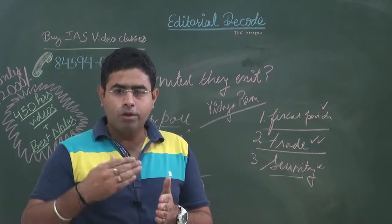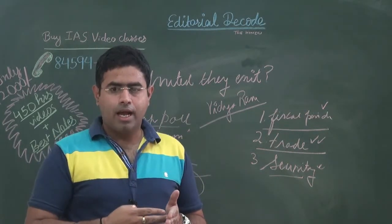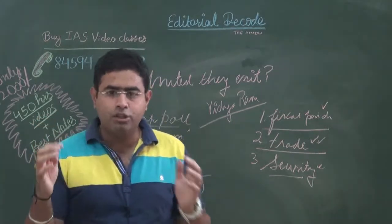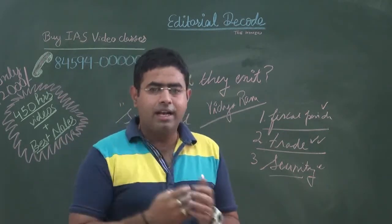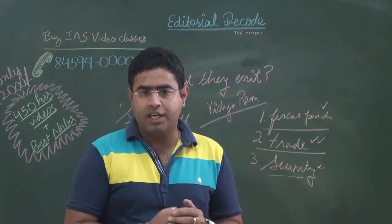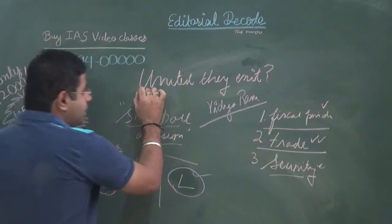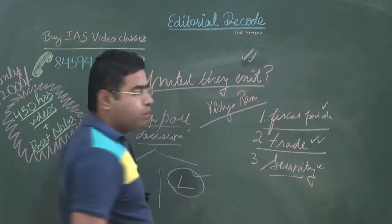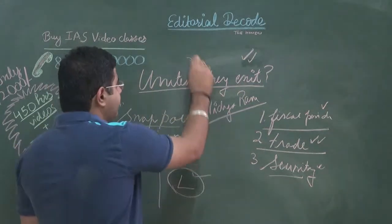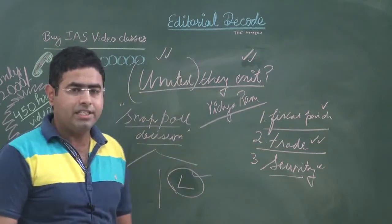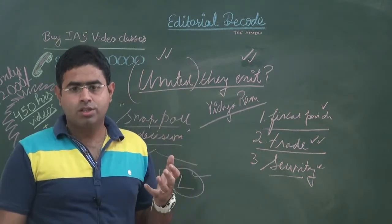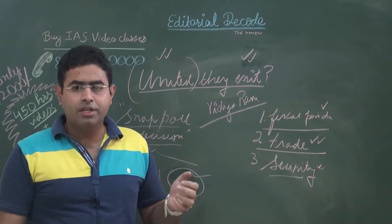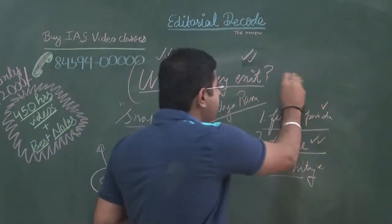In order to have an effective exit and to put forward the policies and ideology that Theresa May stands for, she wanted a larger majority in parliament. To achieve that, general elections needed to take place again. This is what the title of the editorial suggests: 'United They Exit' — before the exit is brought into being, parliamentarians must unite, and this unity will be decided by the general elections Britain will face in the month of June.